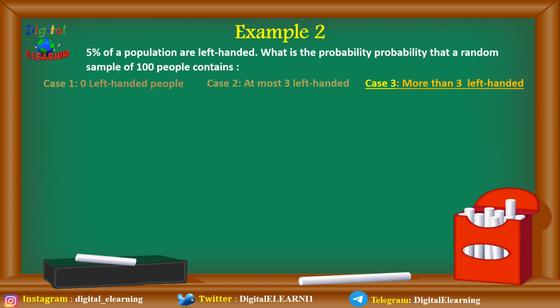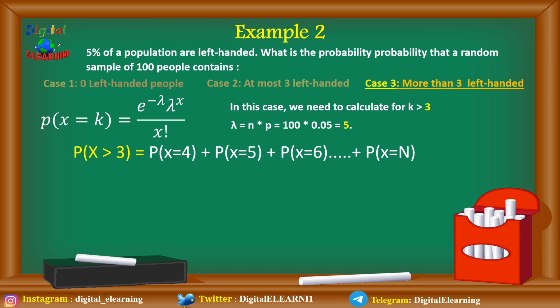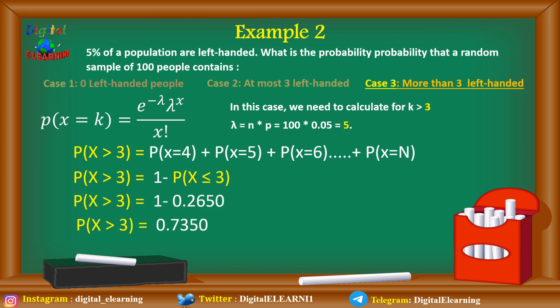For case 3, more than three left-handed people: we need k greater than 3, which would mean calculating for x = 4, 5, 6, and so on, which is difficult. Instead, we use the complement rule — the sum of all probabilities equals 1. So P(x > 3) = 1 − P(x ≤ 3) = 1 − 0.2650 = 0.7350. The probability that a sample contains more than three left-handed people is 73.5%.